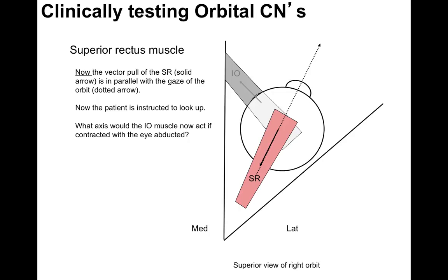What axis would the inferior oblique muscle act on if it contracted with the eye abducted? It acts on the z-axis — it torques the eye — and that's not something that's easy to see.